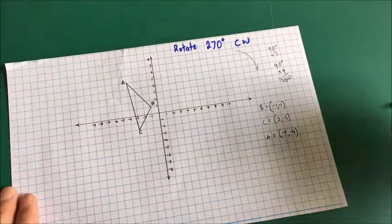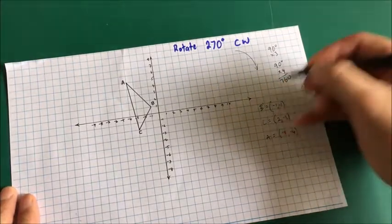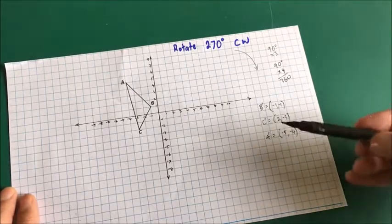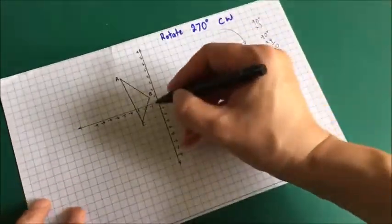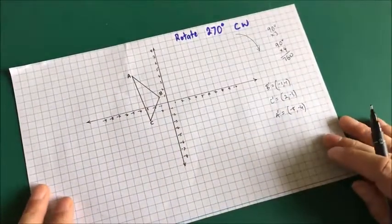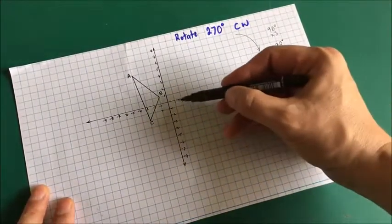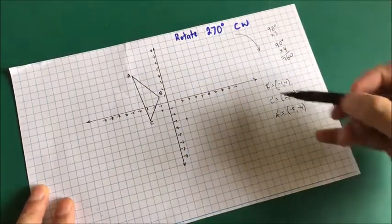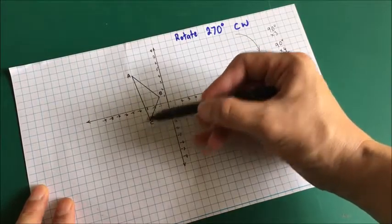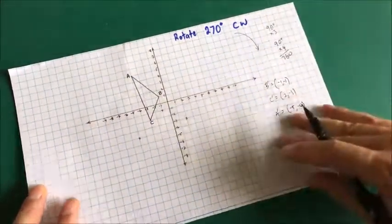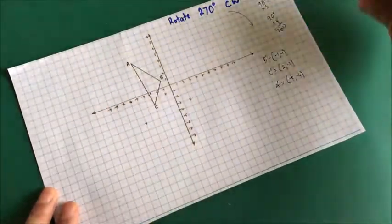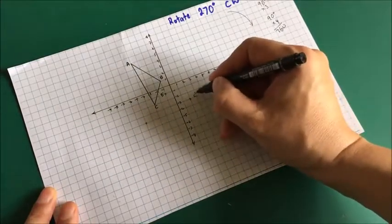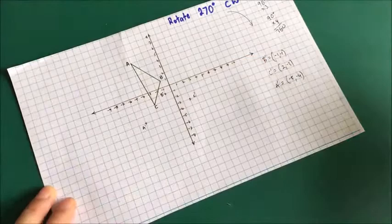Now that I have the coordinates of the image - the image of B, the image of C, and the image of A - I just have to plot them onto the four-quadrant grid. B' is at (-1, -1), C' is at (2, -3), so 2 across and minus 3 down is where C' goes. A' is at (-5, -4), so minus 5 all the way over to minus 4. I'll label these: this is B', this is C', and this one here is A'.